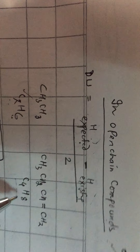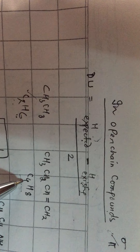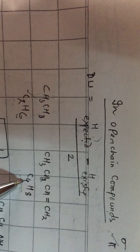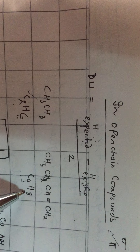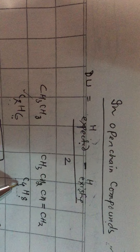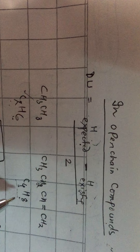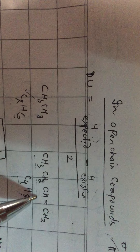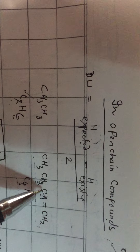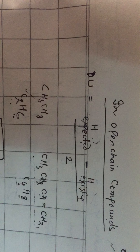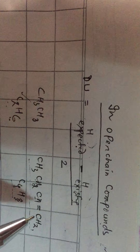For C4H8, applying CnH2n+2 to 4 carbons gives C4H10. Expected hydrogens are 10, existing are 8. So (10 - 8) / 2 gives degree of unsaturation = 1, indicating one pi bond. Total atoms: 4 + 8 = 12, minus 1 gives 11 sigma bonds. You can write many structures placing the double bond between different carbons, but essentially it has 11 sigma bonds and 1 pi bond.